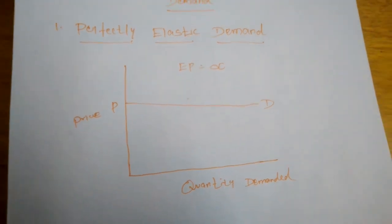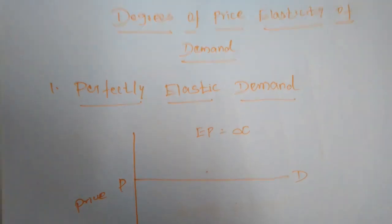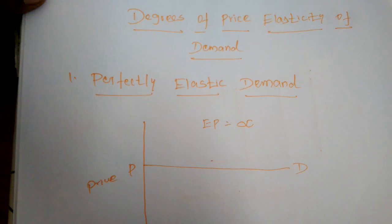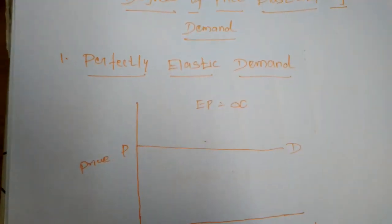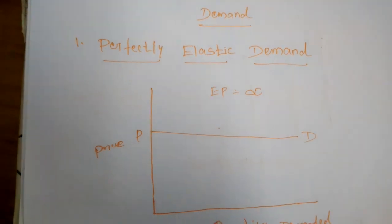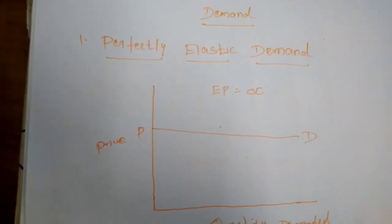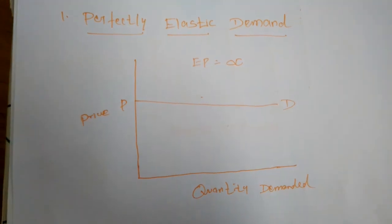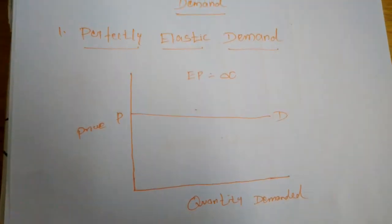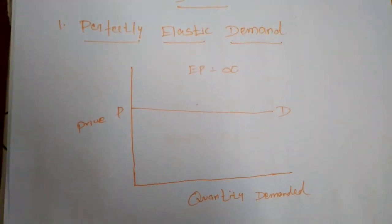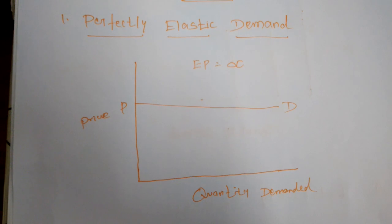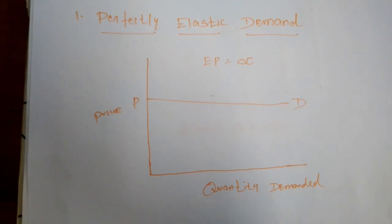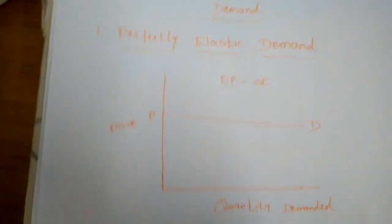First, we study the degrees of price elasticity of demand. Price elasticity of demand is commonly known simply as elasticity of demand, because price is the most important determinant of demand. It refers to the degree of responsiveness of demand to a change in the price of the commodity. The first degree is perfectly elastic demand.